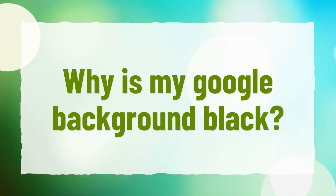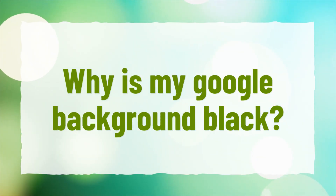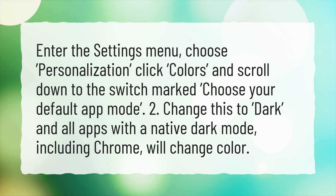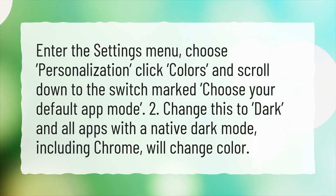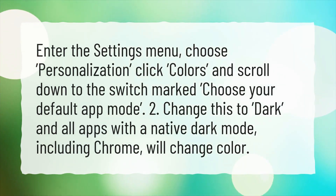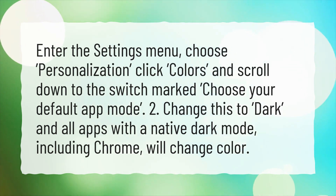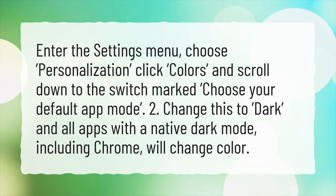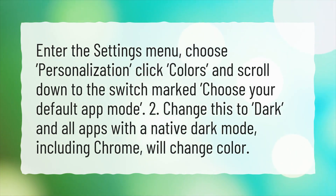Why is my Google background black? Enter the Settings menu, choose Personalization, click Colors, and scroll down to the switch marked 'Choose your default app mode.' Change this to Dark, and all apps with a native Dark mode, including Chrome, will change color.